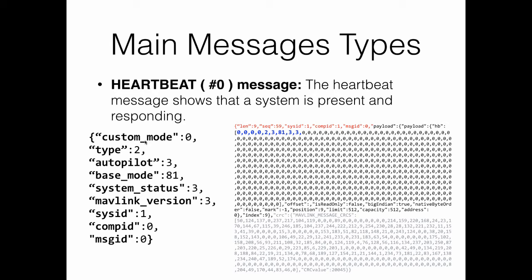The system ID is equal to 1, and this must be unique for every drone. It is possible to change the system ID of the vehicle by setting a new value to the parameter SYSID_THISMAV. We will illustrate how to do this at a later stage using a ground station. The message ID is equal to 0, referring to the heartbeat message.